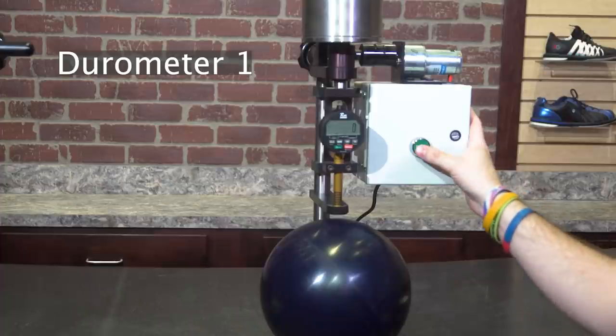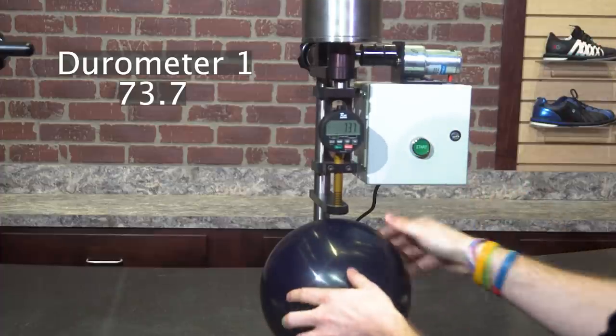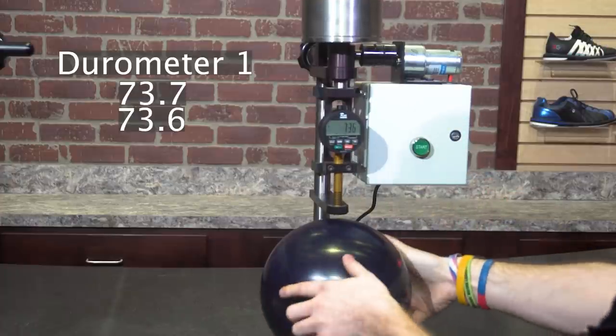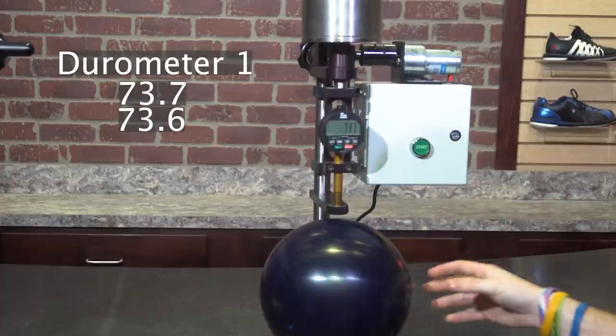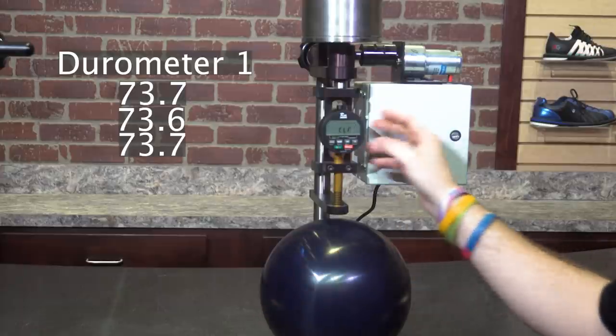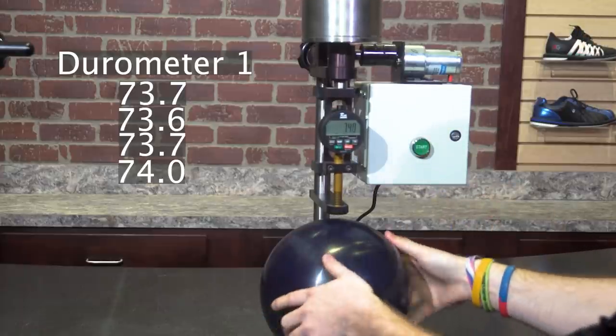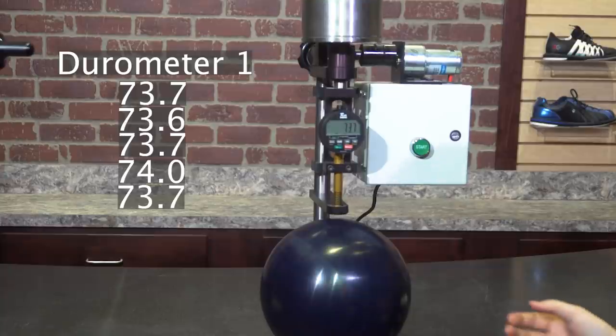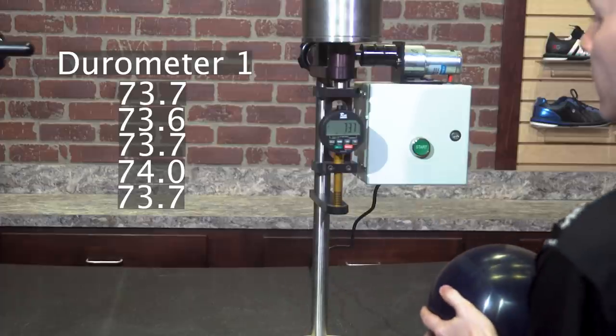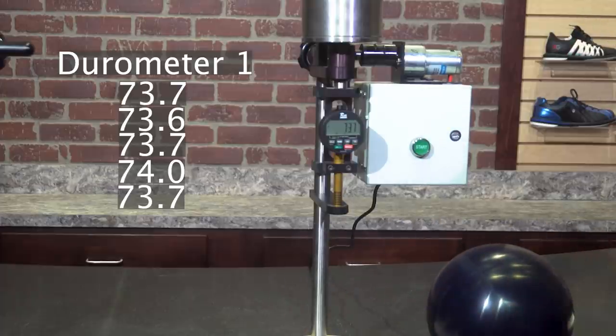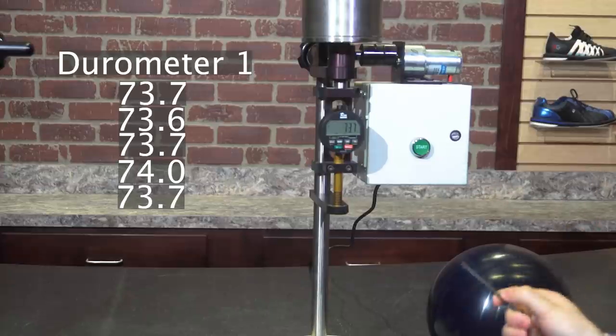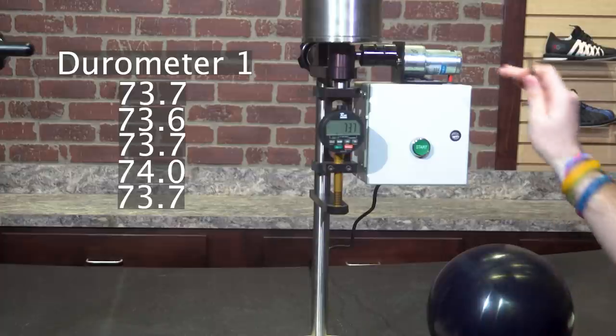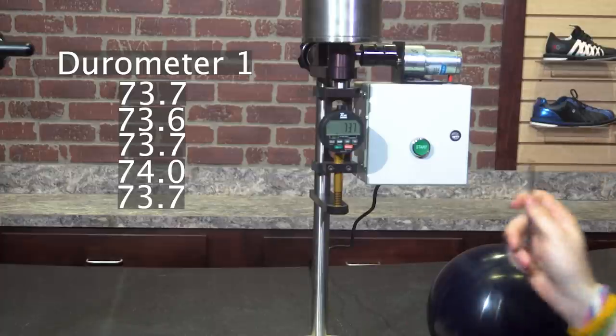If we check this ball here a few times around the surface of the ball, you can see we get 73.7, 73.6, 73.7, 74.0, and 73.7. So you can see we're roughly at about 73.75, plus or minus a little bit. What we're going to do is actually change out the durometers in this and see what differences we see using no human error with this automated stand with two different durometers.